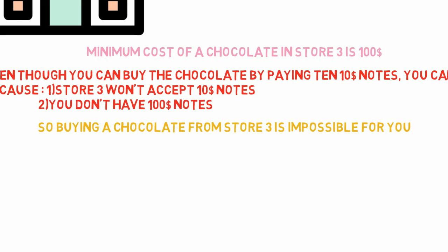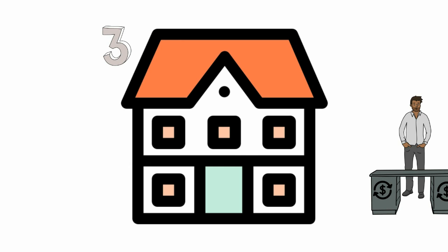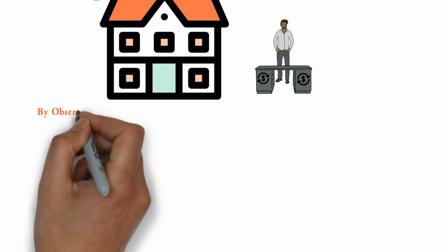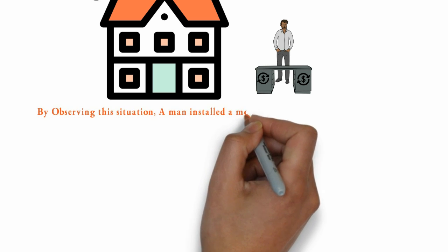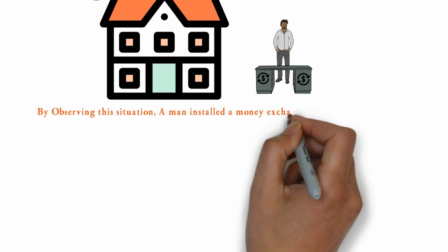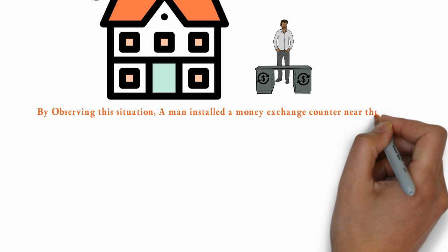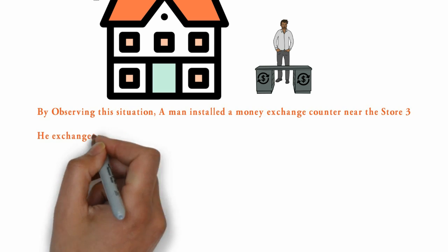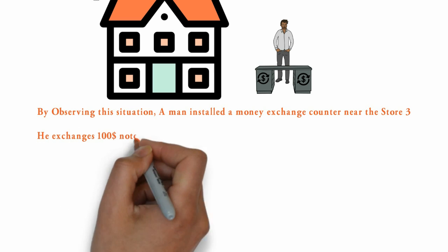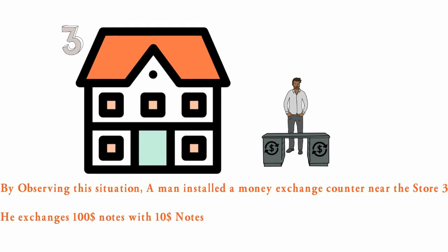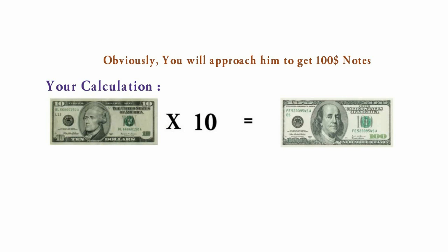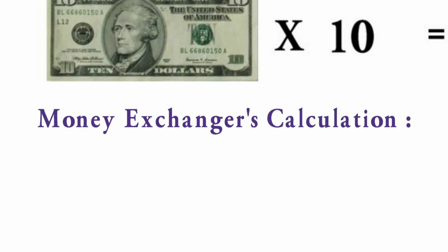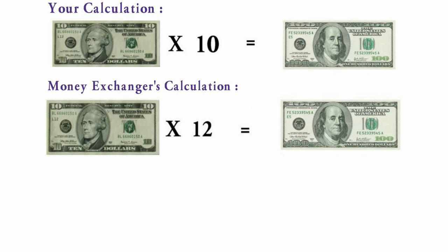What do you do now? Well, by observing all this, a wise man installed a money exchange altar near Store 3. He gives $100 notes to his customers by taking $10 notes from them. You may think that you can get a $100 note by giving 10 $10 notes, but the money exchanger demands 12 $10 notes to give a $100 note in return.